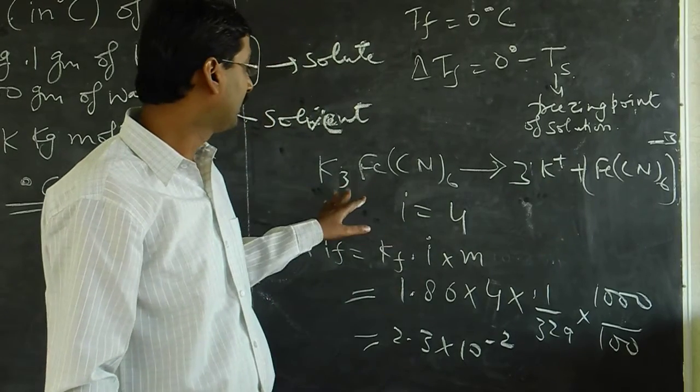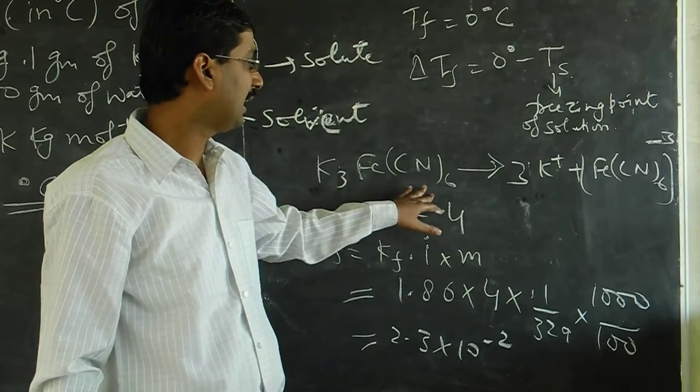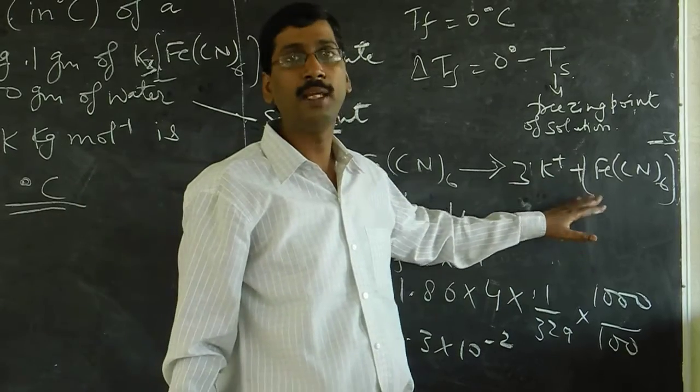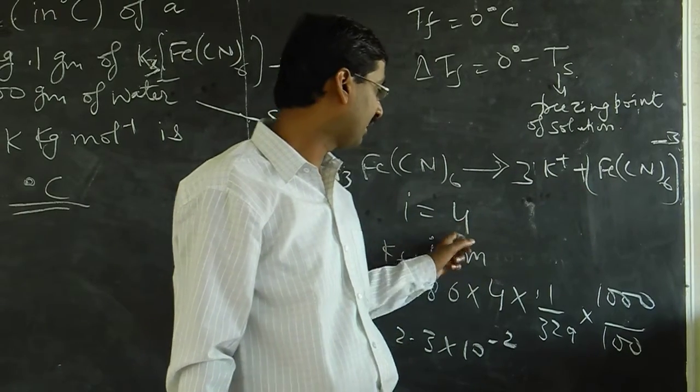So here, K3Fe(CN)6 dissociates into 3K+ and Fe(CN)6 3-, so we have a van't Hoff factor of 4.